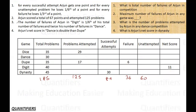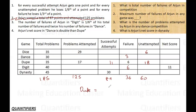The number of failures of Arjun in Digit is one-sixth of the total number of failures, so in Digit the failures are 1/6 of 36, which is 6 — and also twice the number of failures in Dance, so Dance failures = 3. In Dupe, he has 35 total problems and attempted 29, so he left 6. He attempted 17 successfully out of 29, so the score of Dupe is: 11×1 − 6×(1/3) − 18×(1/6) = 11 − 2 − 3 = 6.